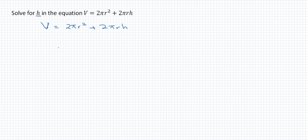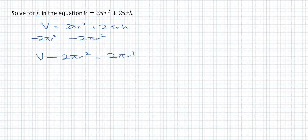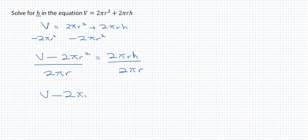When we say isolate, we mean we want that variable to stand alone on one side of the equation. So the first thing we do is subtract 2 pi R squared from both sides. Now we have V minus 2 pi R squared equal to 2 pi R H. Since 2 pi R is the coefficient of H, we divide both sides by 2 pi R, giving us H equals V minus 2 pi R squared over 2 pi R.